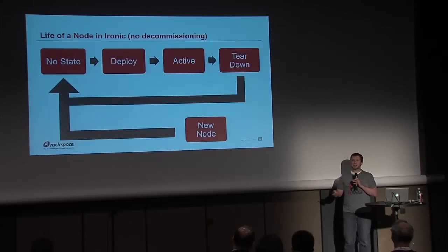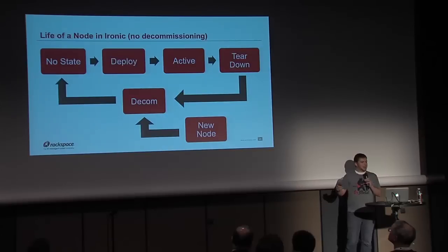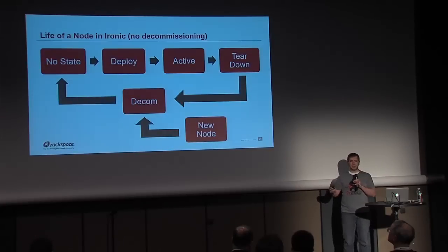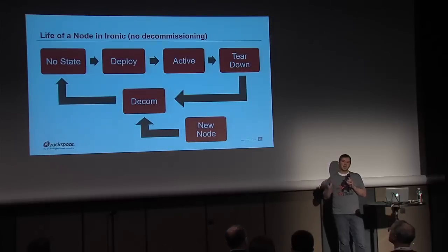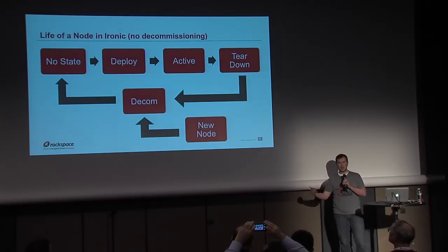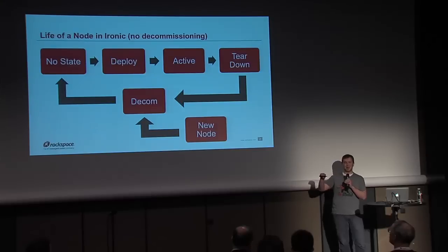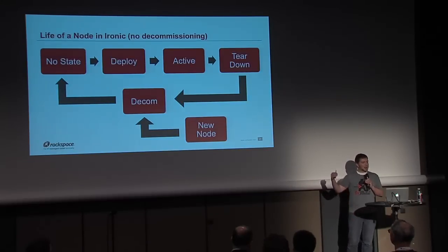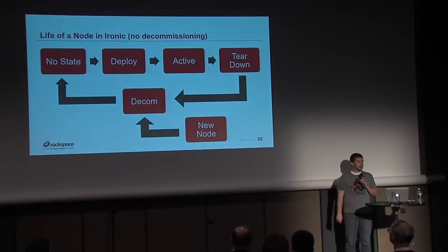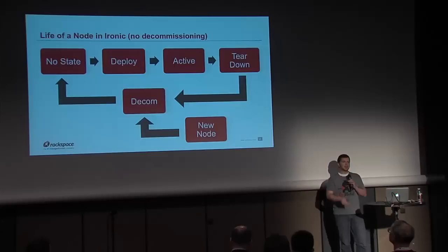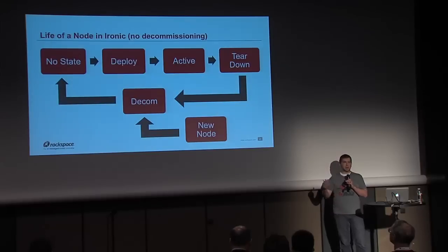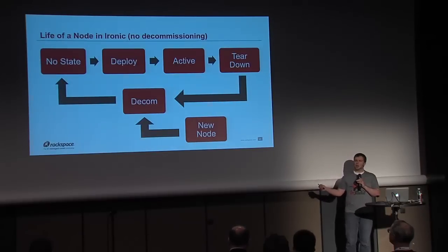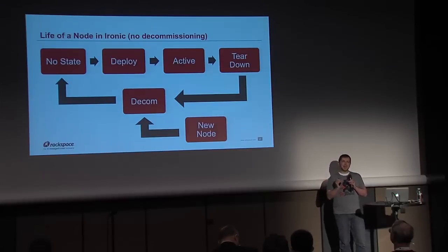We want to do decommissioning, so we added a new 'decomm' state after teardown. Same as before: tenant in active state calls delete, it goes into teardown — which does a minimal set of steps so the node is removed from the user's list quickly, because we don't want decom to take four hours with your node showing 'deleting.' After that, it moves into a decomm state where we do all the work. Once decommissioning is done, it moves back into 'no' state — ready for provisioning, with hardware verified and working. For a new node, you should also put it through decommissioning first to verify it.